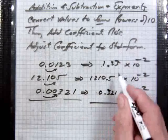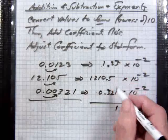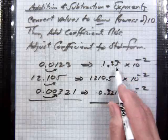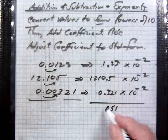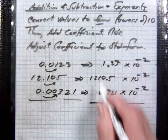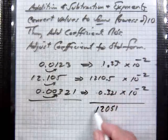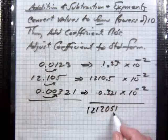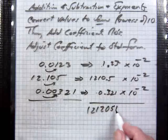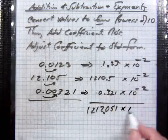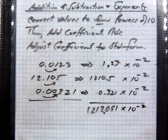And then we add the coefficient. And again, you need to line up the decimal places. So, we have 1.23, 1210.5, and 0.321. That's 1211.2051 times 10 to the minus 2. I hope I got it right.